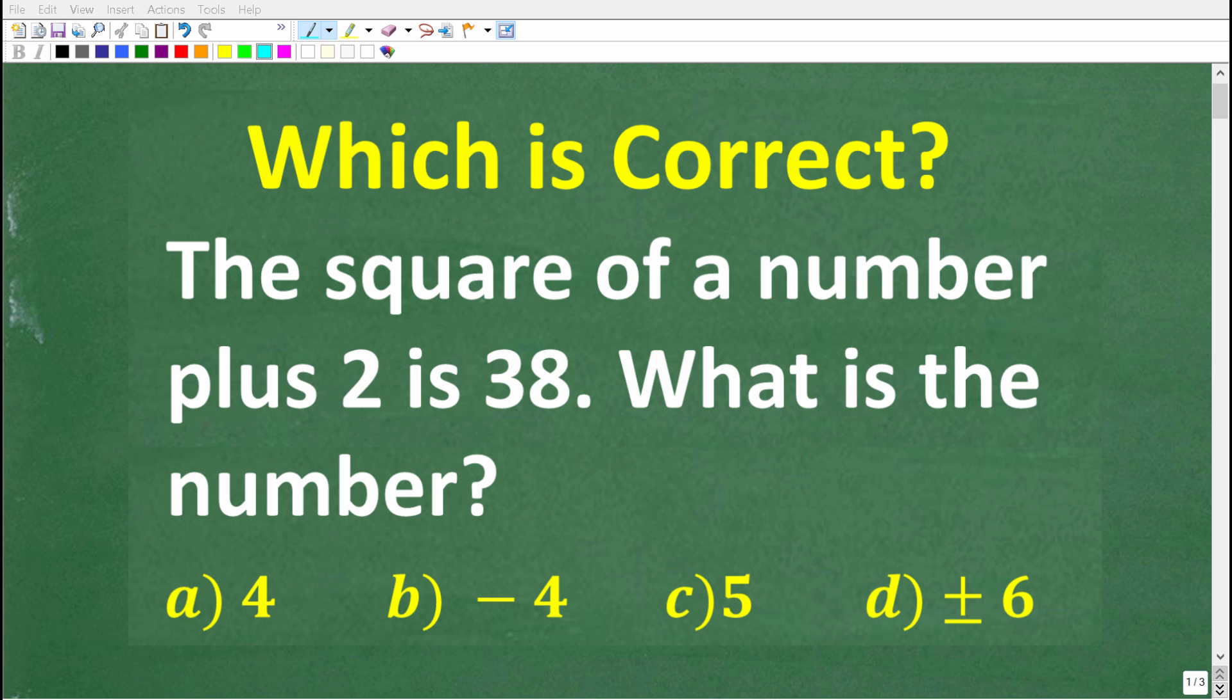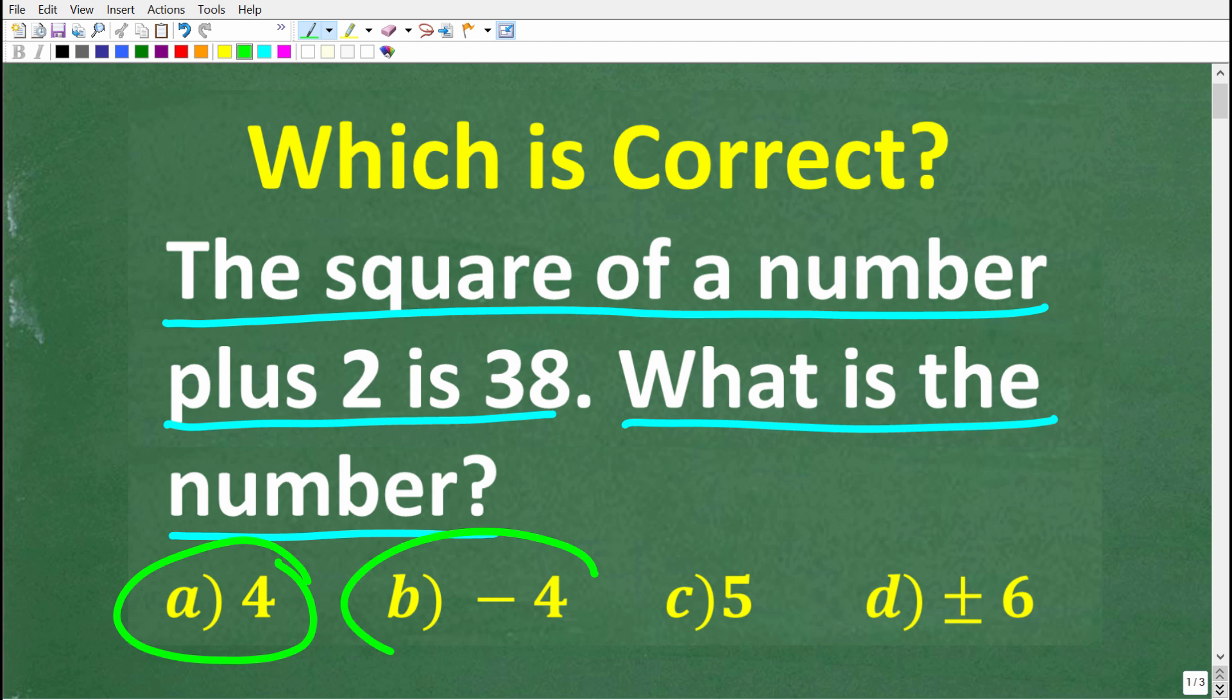Okay, so let's see if you can figure out how to solve this word problem. Here is the question: the square of a number plus 2 is 38. What is the number? Now feel free to use a calculator, but we do have a multiple choice question here. Let's take a look at our answers. So A is 4, B is negative 4, C is 5, and D is positive and negative 6.